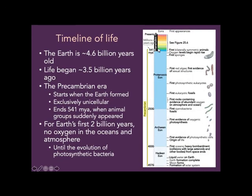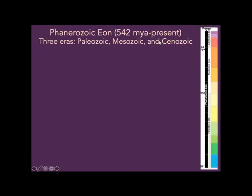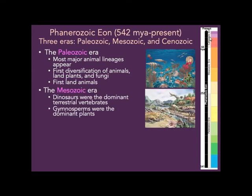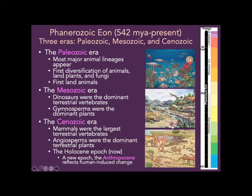The Phanerozoic spans from 541 million years ago to the present and is broken into three eras: the Paleozoic, Mesozoic, and Cenozoic. In the Paleozoic, most major animal lineages appeared — animals, land plants, and fungi diversified, and you get the first land animals. In the Mesozoic, dinosaurs were the dominant terrestrial vertebrates and gymnosperms were the dominant plants — cone-bearing plants — with flowering plants only appearing right at the end. In the Cenozoic, mammals were the largest terrestrial vertebrates and angiosperms — flowering plants — were the dominant terrestrial plants.